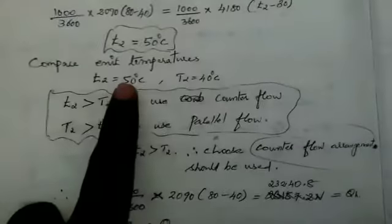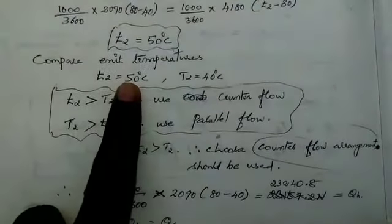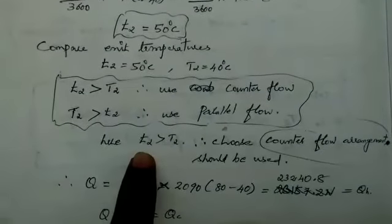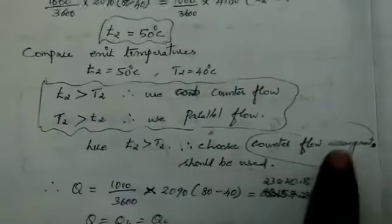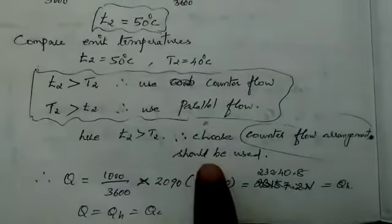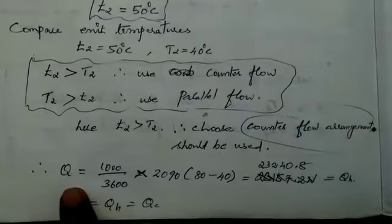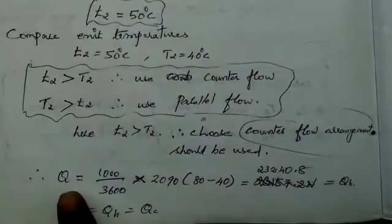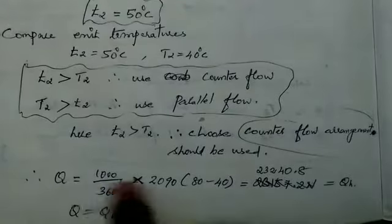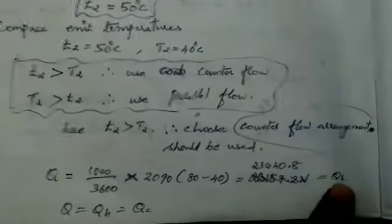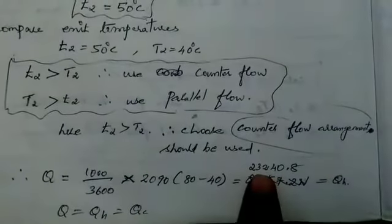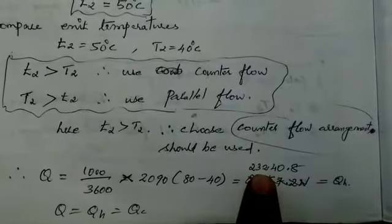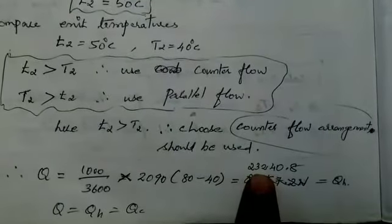Now we substitute the temperatures. Choosing counter flow, we solve for Q. The result is Q = 23240.8 Watts.